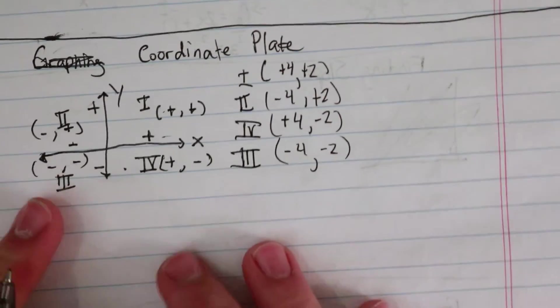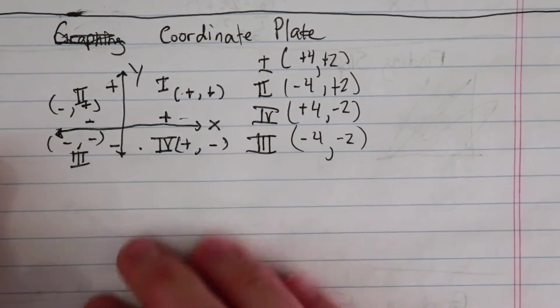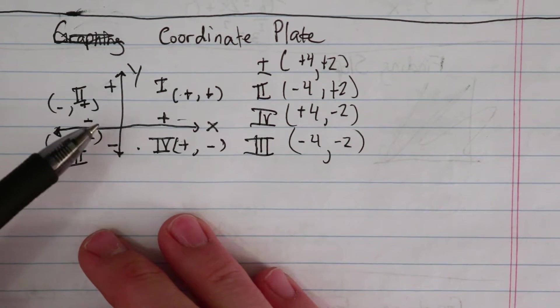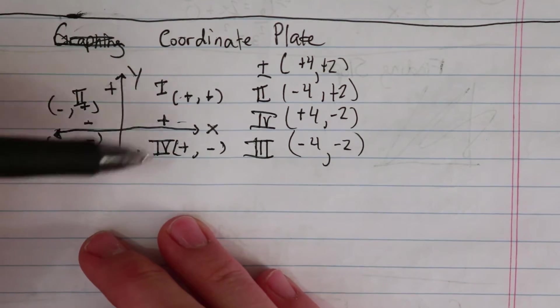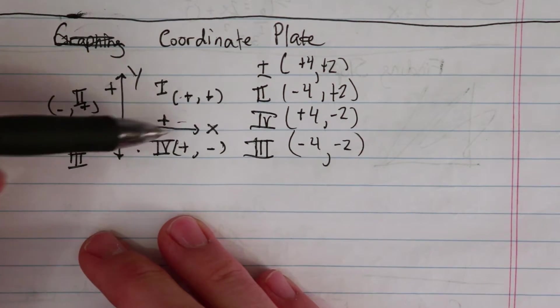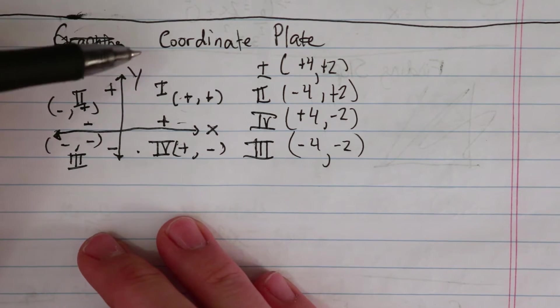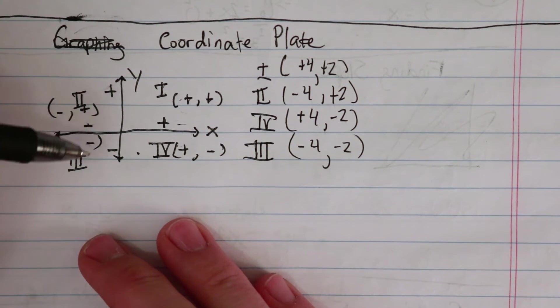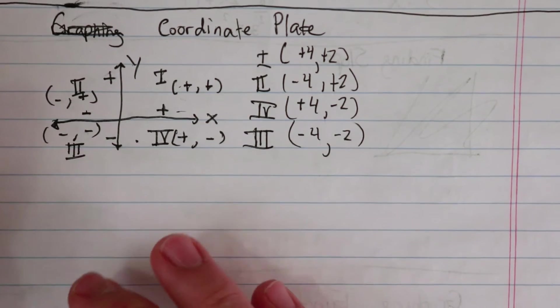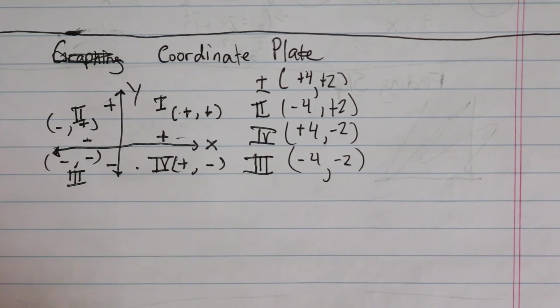So that's some things to know about the coordinate plane. And another thing is that when a function goes into this plane, when it crosses the x-axis, that's called the x-intercept, and the y-intercept is where the function crosses the y-axis. So that's some things to know about a coordinate plane.